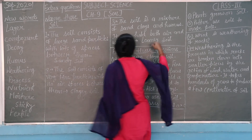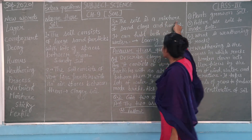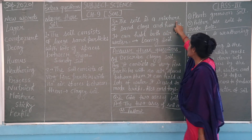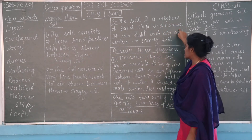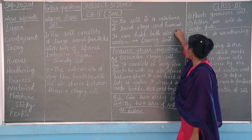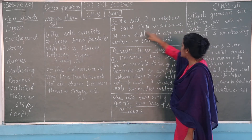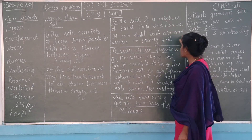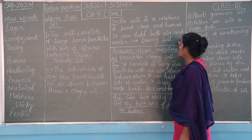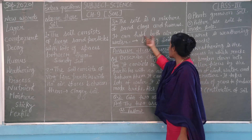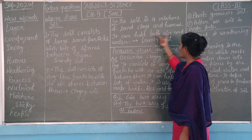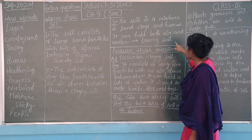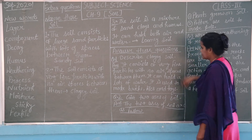Third is the soil is a mixture of sand, clay and humus. As you can see, soil is a mixture of sand, clay and humus. It can hold both air and water, so the answer is Loam Soil.